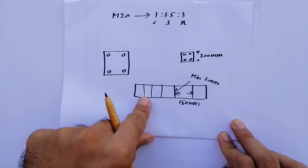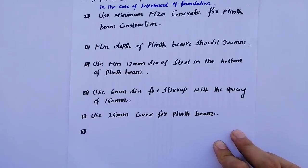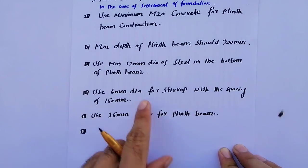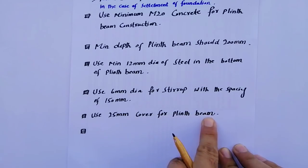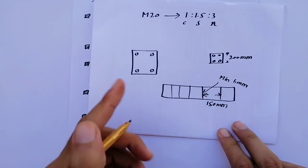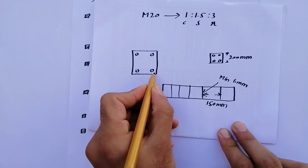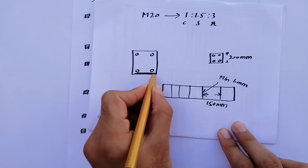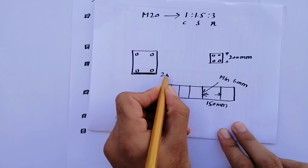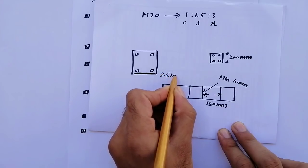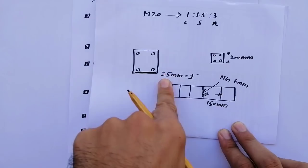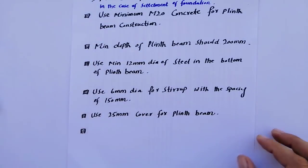The last point: use 25 millimeter clear cover for plinth beam. As shown here, this is the plinth beam and this is the concrete cover. Use 25 millimeters — that is one inch — as the clear concrete cover for plinth beam.